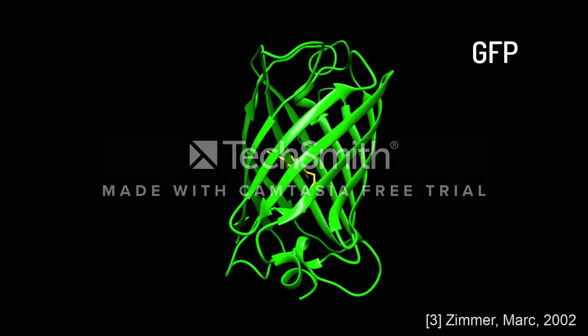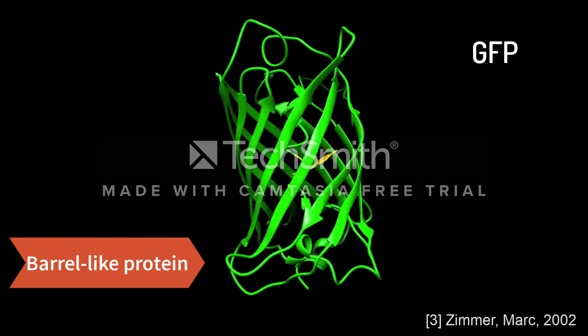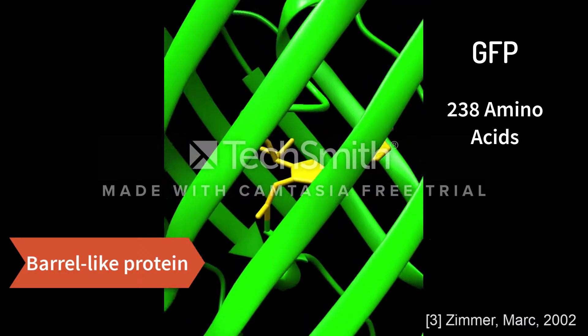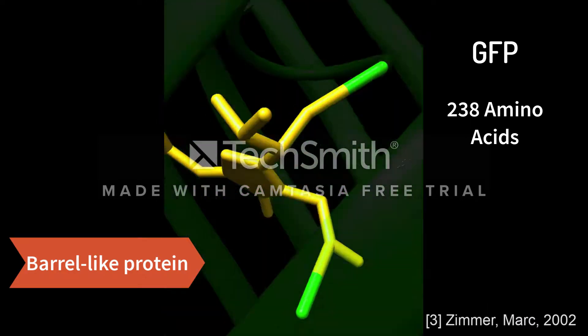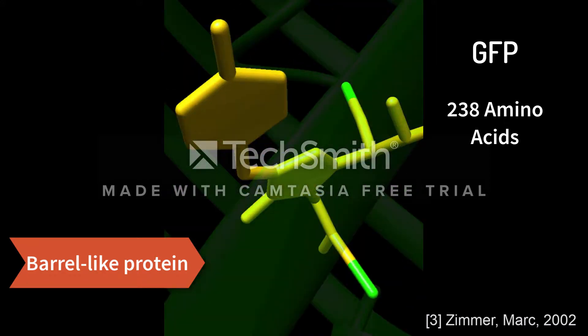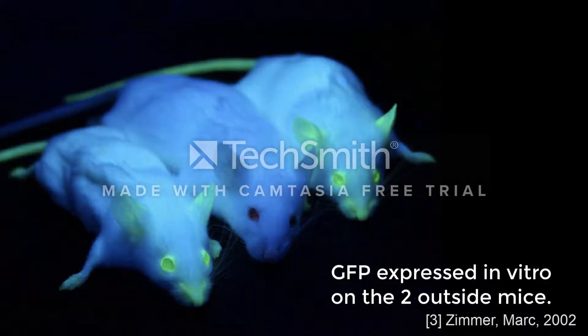GFP is a barrel-like protein composed of 238 amino acids that has become one of the most important tools in the research of the living cell. It is so useful as a biological marker because the energy transfer reaction between Aequorin and calcium can be replicated in vitro by exposing GFP to ultraviolet light.